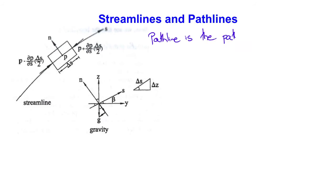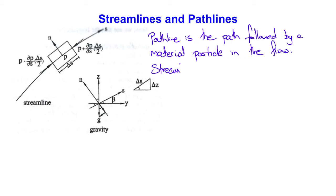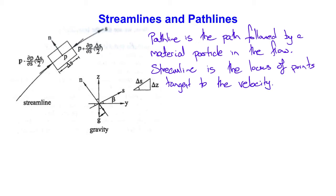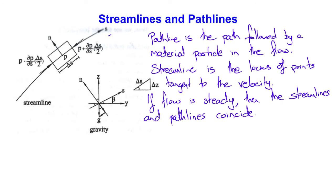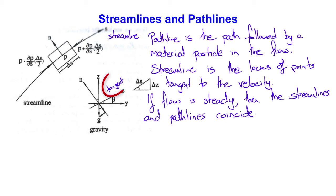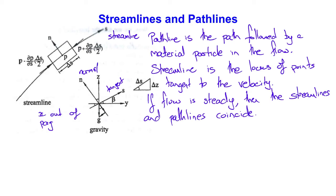In a flow, the pathline is the path followed by a material particle, and the streamline is the locus of points tangent everywhere to the velocity vector field. If a flow is steady, the streamlines and pathlines coincide. It is useful to use the streamline to define a local coordinate system, where s is tangent to the streamline, n is normal to the streamline, and x is normal to the plane of n and s — in this case, out of the page.